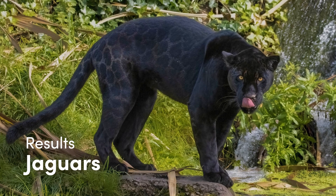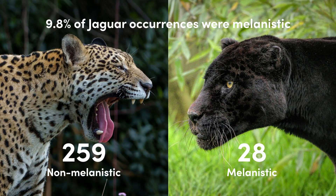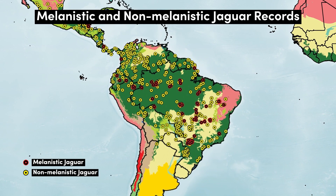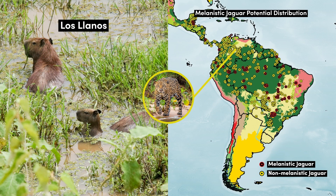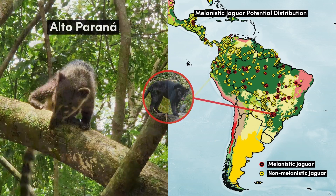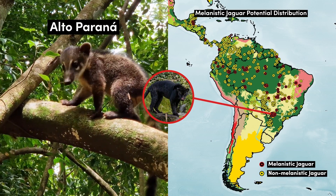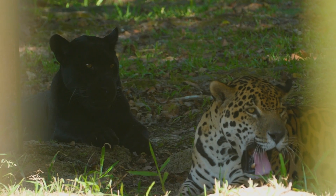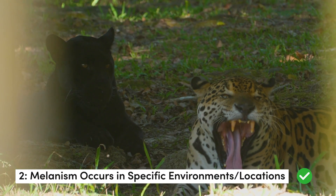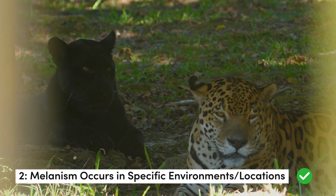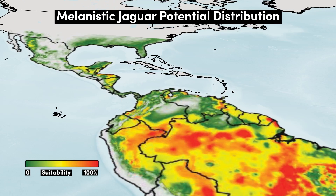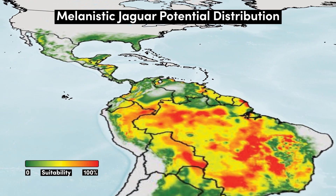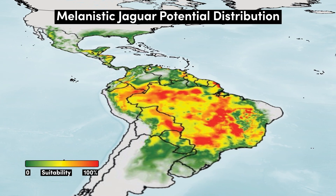Of the 980 jaguar occurrence records, a similar 9.8% of individuals were melanistic, with most records for melanistic individuals occurring in South America. Grassland ecoregions like the Pantanal and Los Llanos showed a complete lack of melanism, whereas forest ecoregions such as the Alto Paraná Atlantic Forest showed high frequencies. In similar fashion to leopards, this suggests that the occurrence of melanistic jaguars is also not random. Maps show the potential distribution of non-melanistic and melanistic jaguars, with predictors relating to temperature showing the strongest correlation.